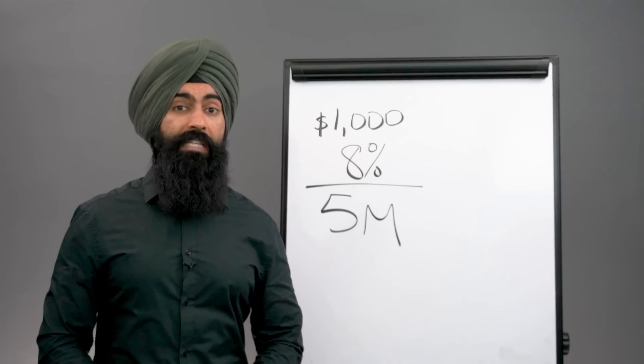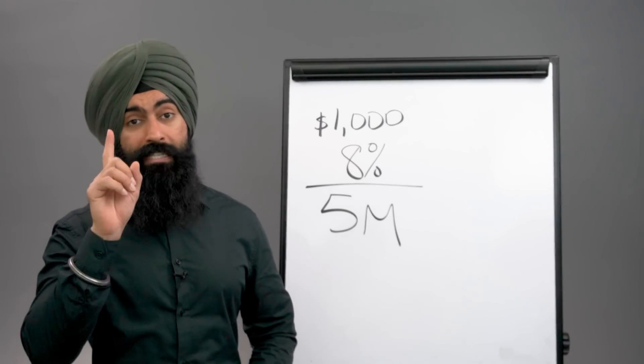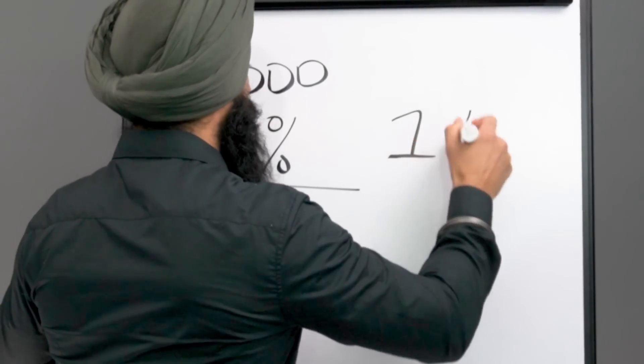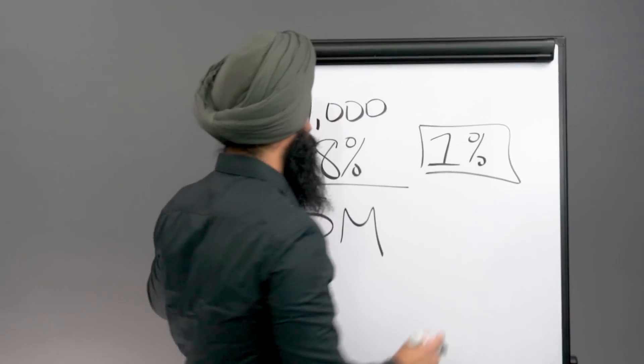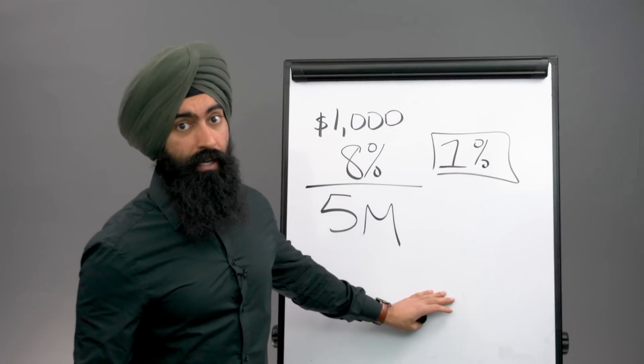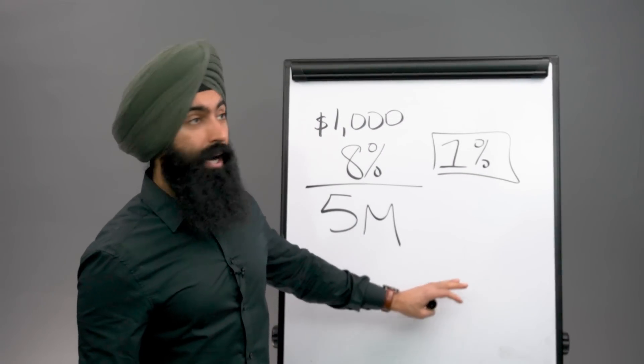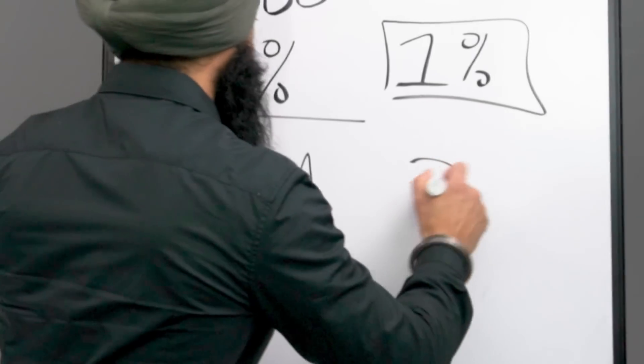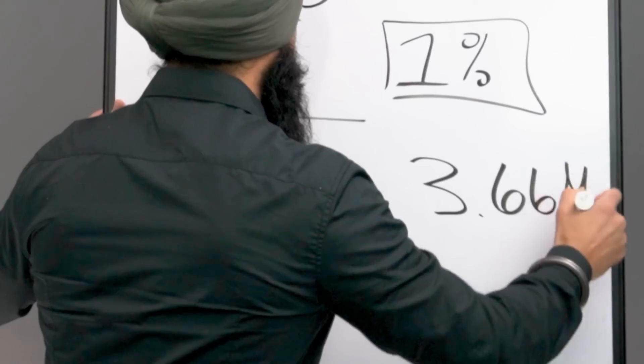But what about fees? If you had to pay a small 1% fee, well, now your wealth is going to drop from $5 million, not to $4.5 million, not to $4 million, but to $3.66 million.